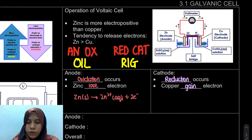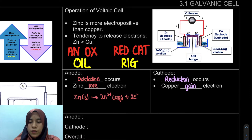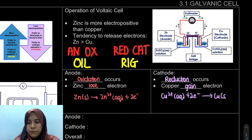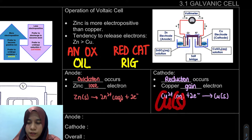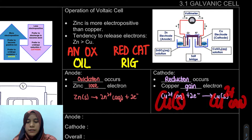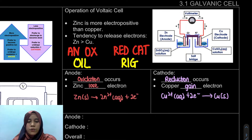At the cathode, the reduction process means gaining electrons. The species that gains the electron is Cu²⁺, not Cu solid. So: Cu²⁺(aq) + 2e⁻ → Cu(s). Again, checking the one-to-one atom ratio and charge balance: positive 2 and negative 2 give zero charge on both sides. If you write it the wrong way around, the charges won't balance, so make sure to get the direction right.